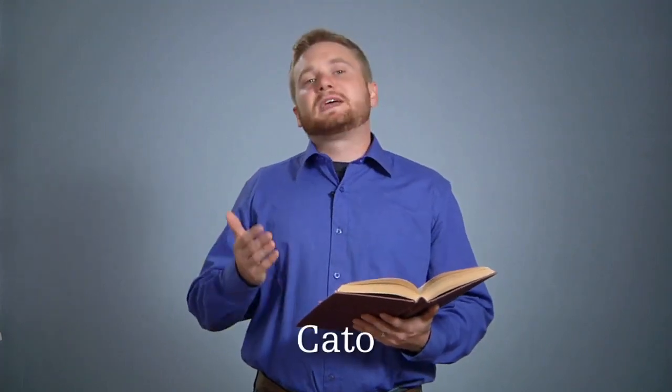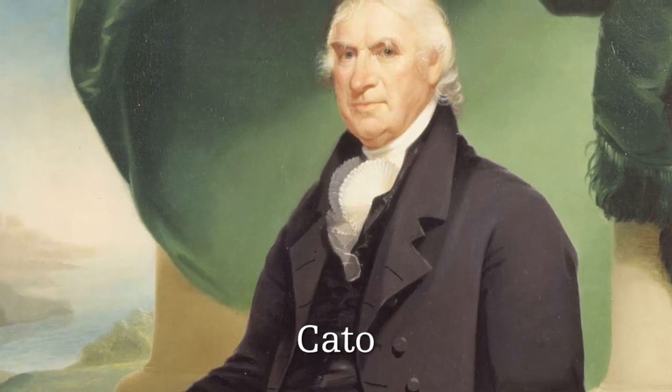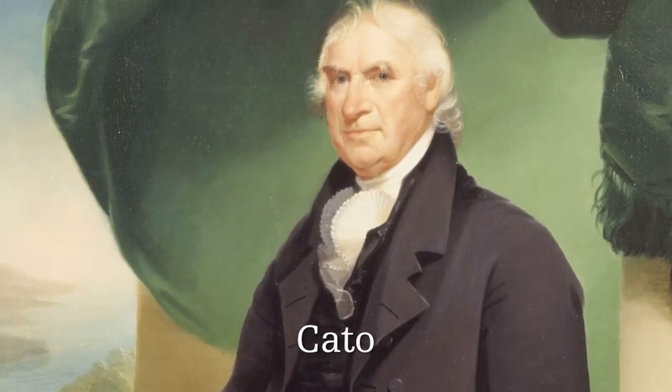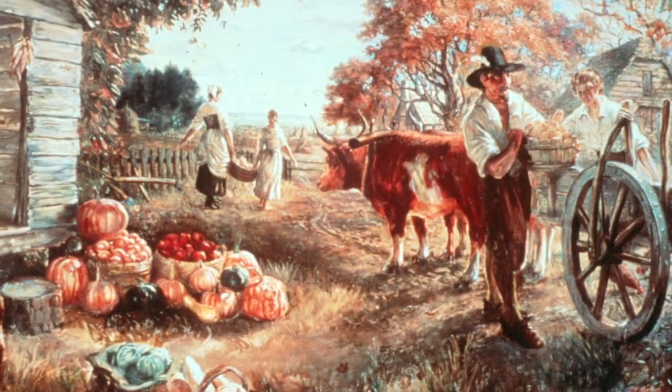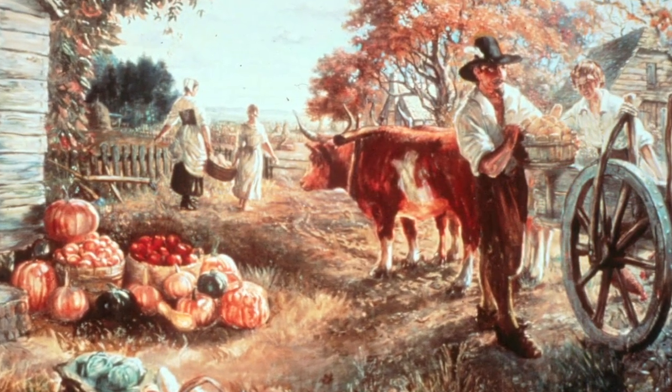There was a writer by the name of Cato. We think it might have been the founding father George Clinton, but we're not entirely certain. Anyway, he wrote this: ordinary people are the best judges where things go well or ill for the public. Every plowman, essentially the farmer, knows a good government from a bad one.